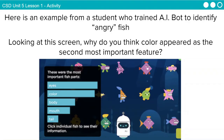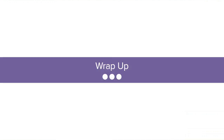Here's an example from a student who trained AI Bot for identifying angry fish. Looking at this screen, why do you think color appeared as the second most important feature? And do you think it's okay to consider a fish angry by its color? Even with a small example like this, we see that machine learning can get into trouble and learn something harmful to a particular type of fish. Having more data and making sure it represents all types of fish can help solve this problem. These types of examples happen in real life too, and can have serious consequences, such as whether or not you receive medical care or get a job offer.